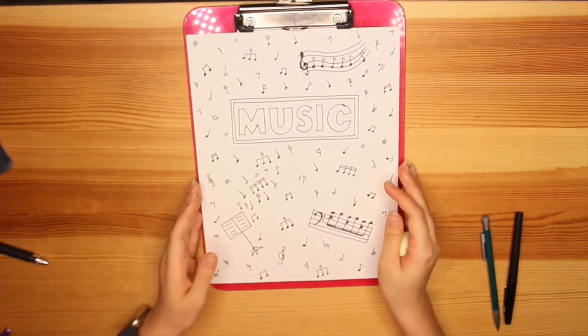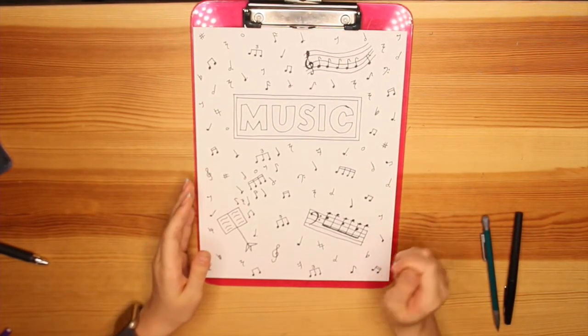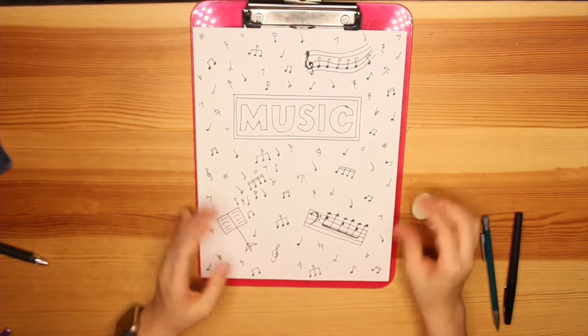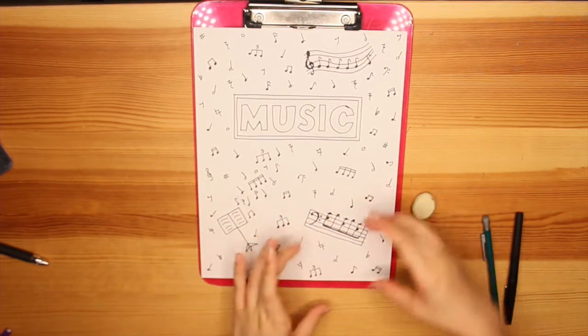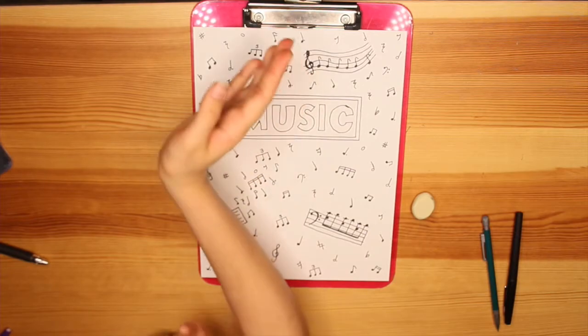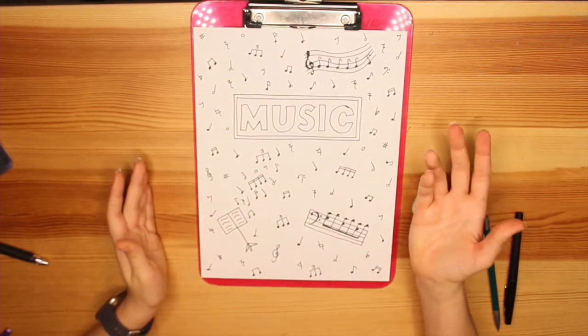So when you finish tracing your design, you're going to go ahead and erase all of the pencil marks. I recommend you start from one section that you know and working to the rest of the paper so that way you know where you've erased.